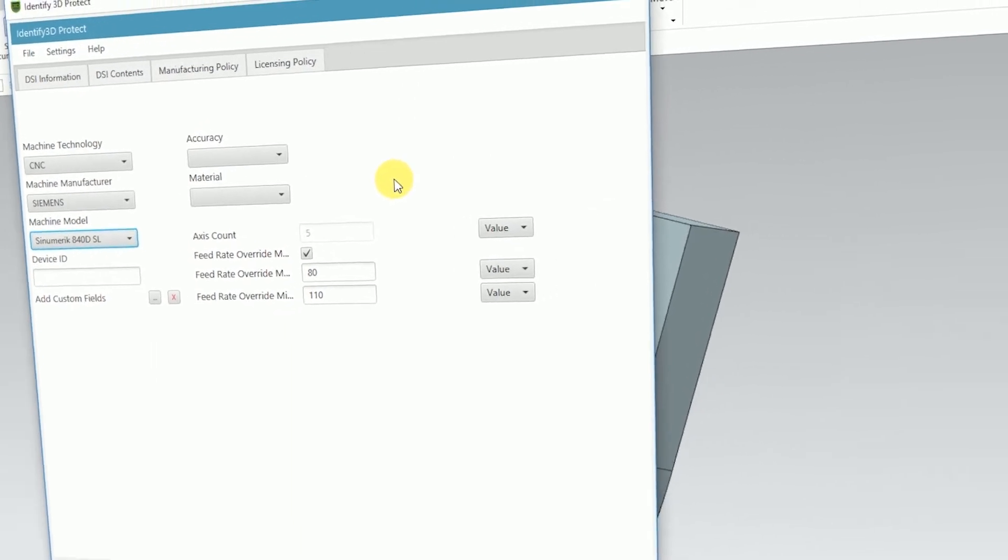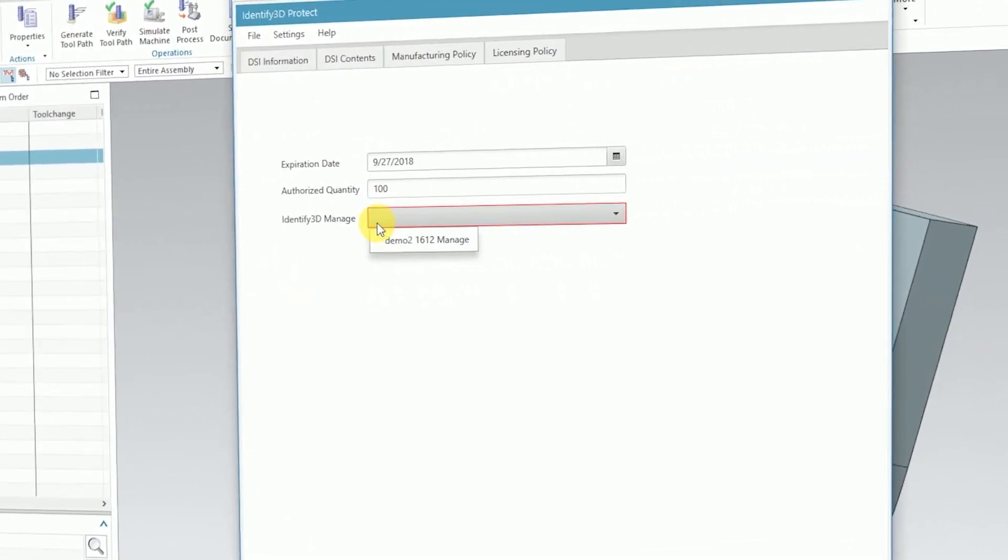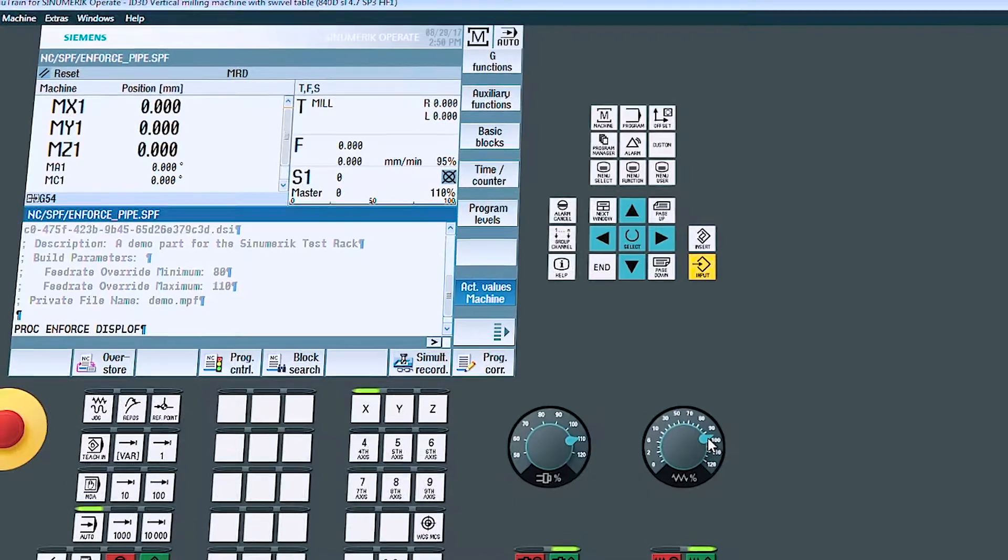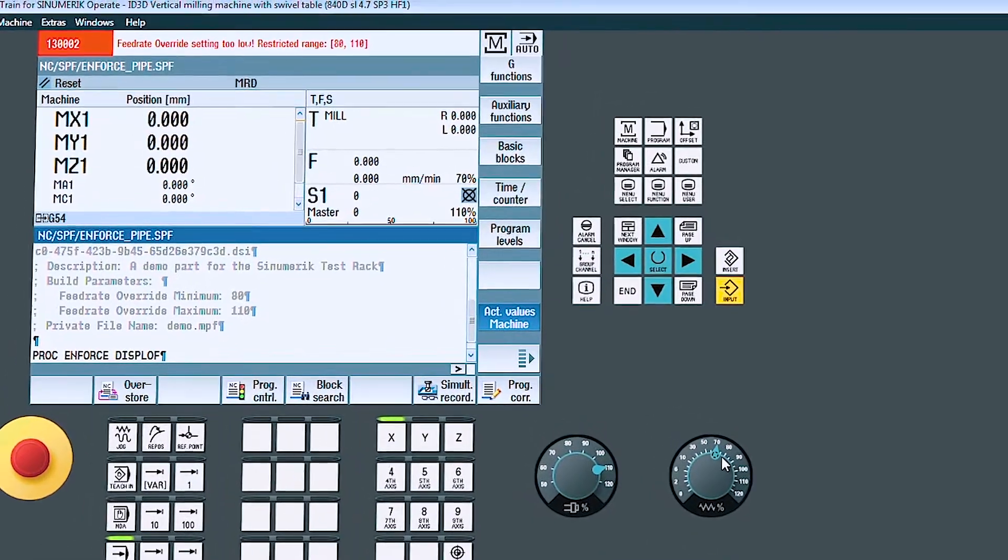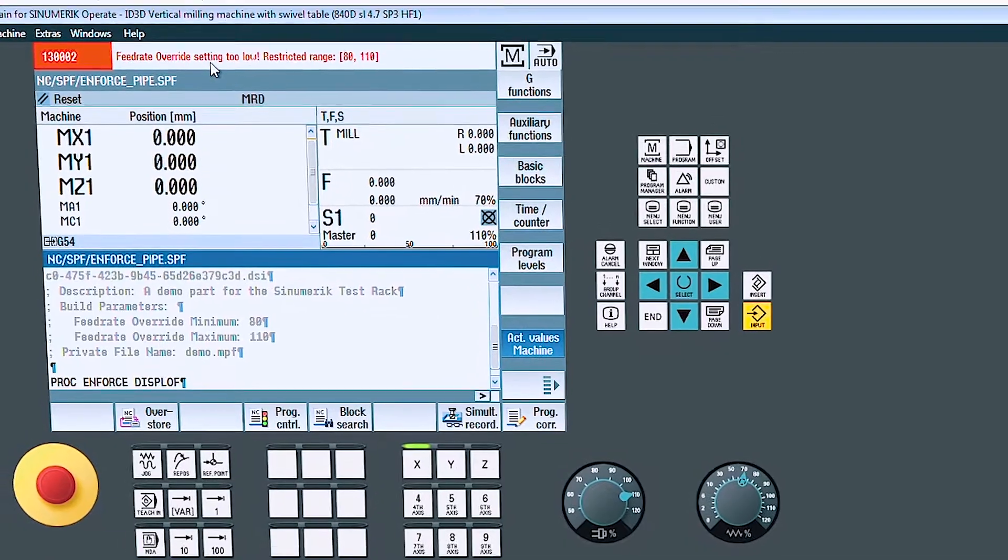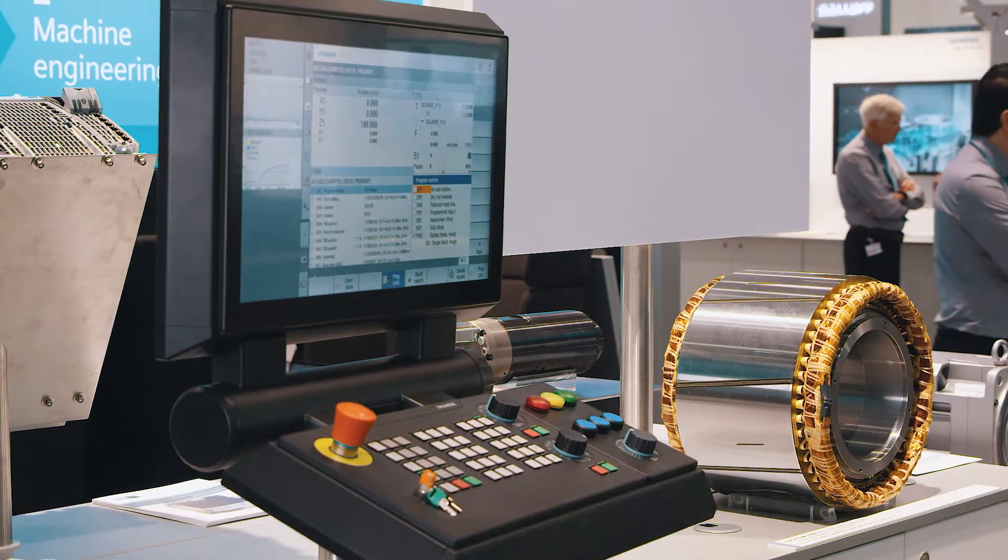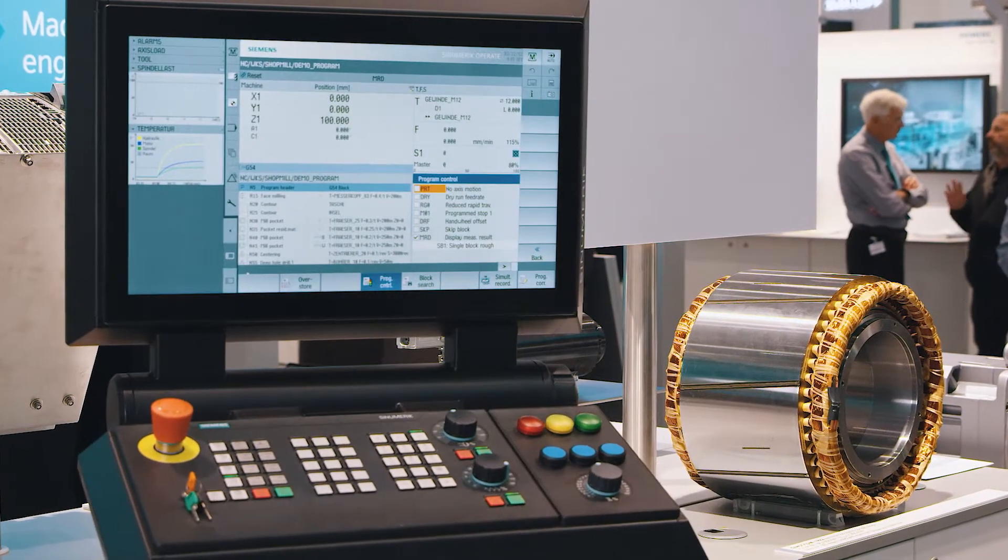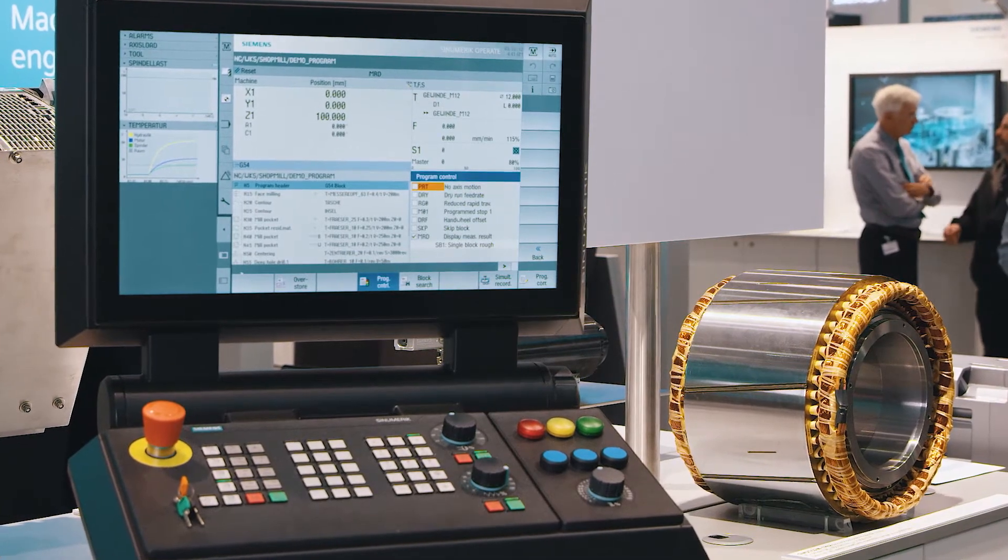For instance, in conjunction with cinameric with identify 3D, we can license a defined number of workpieces and fix the specified production parameters in order to prevent any unauthorized copies. In addition to digital highlights, new functions of the cinameric CNC enhance productivity and usability.